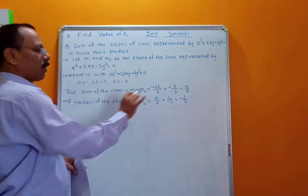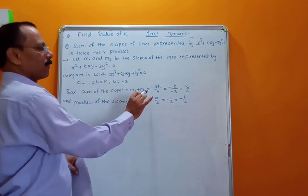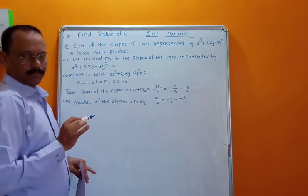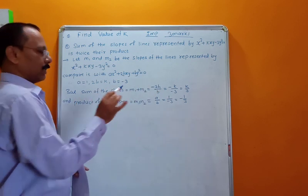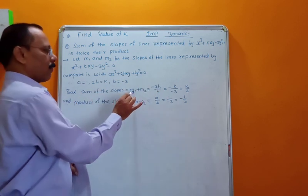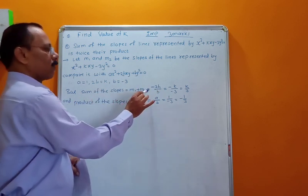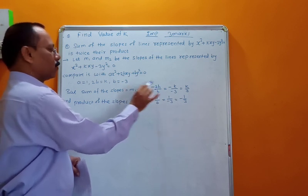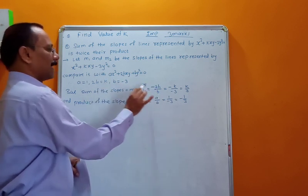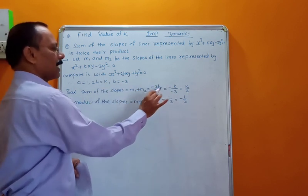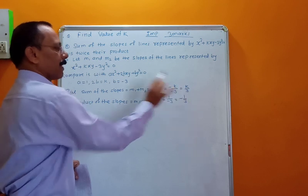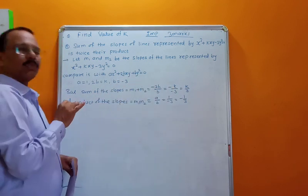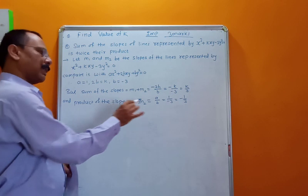The formula for sum of slopes is m1 + m2 = −2h/b. You have to learn this formula. So m1 + m2 = −2h/b, where 2h = k, giving −k divided by −3, which is k/3.